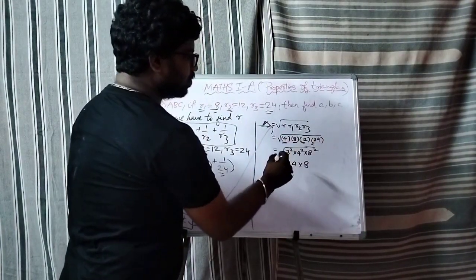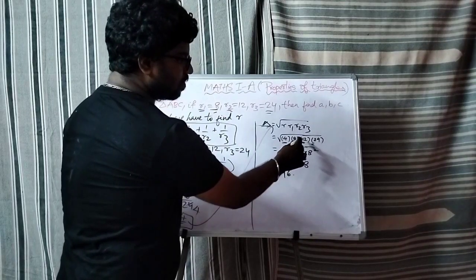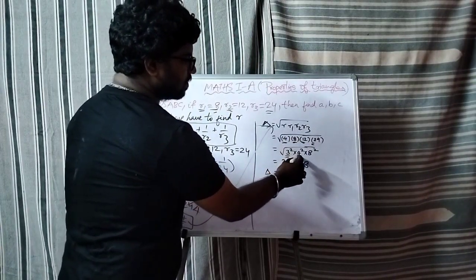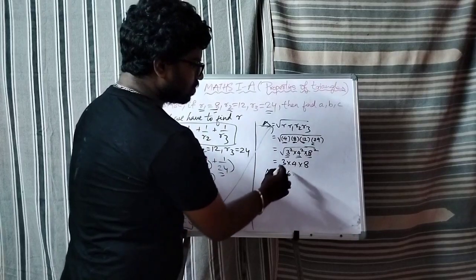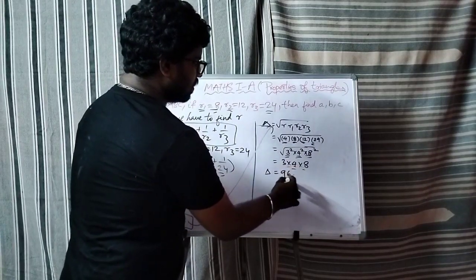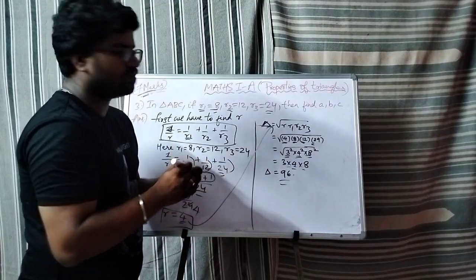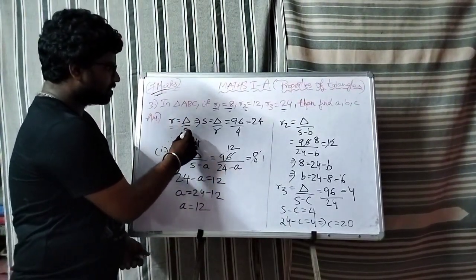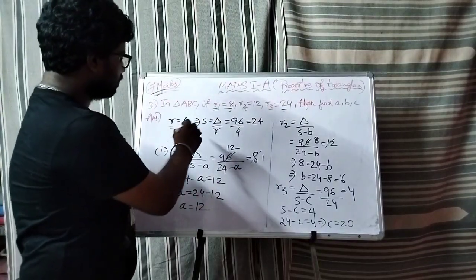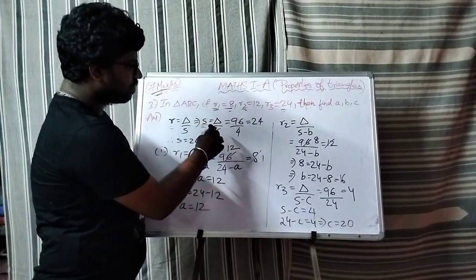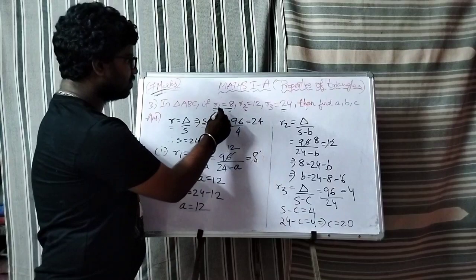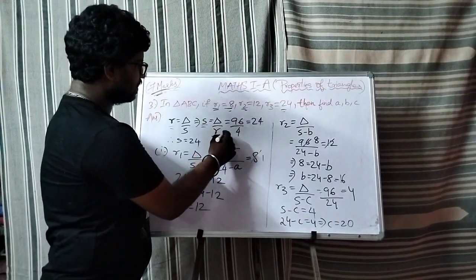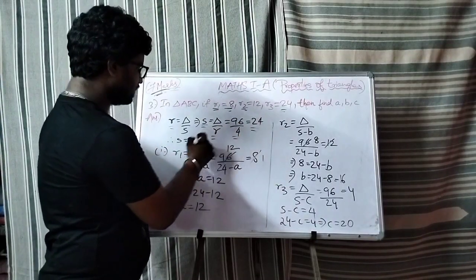Square root of 4 times 8 times 12 times 24. Taking squares common gives 3 times 4 times 8, which is 96. For small a, b, c continuation, we use r equals delta by s. So s equals delta by r, which is 96 by 4, so s value is 24.